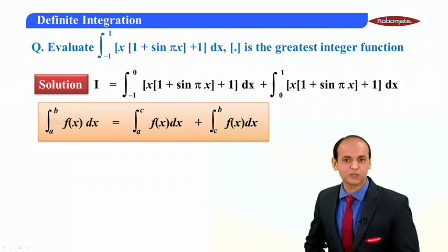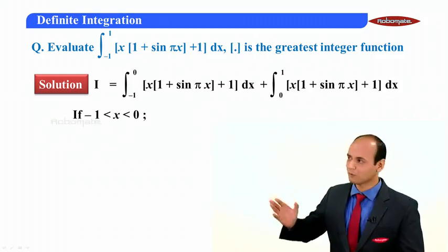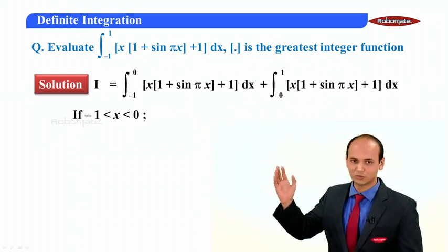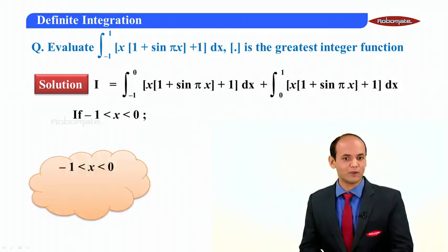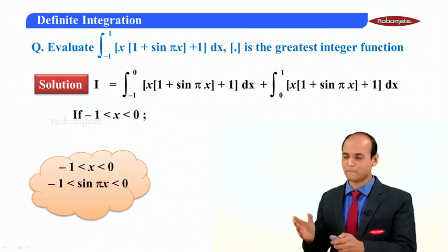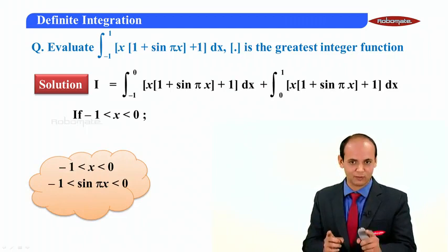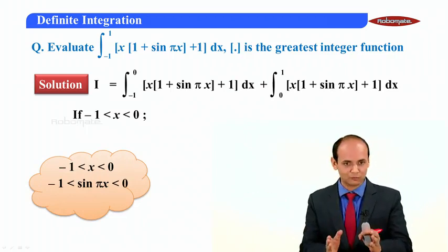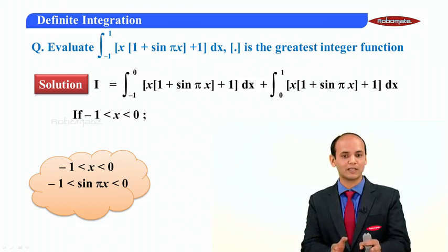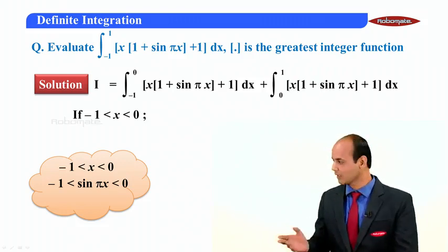Note that in the first integral, limits are from minus 1 to 0. When x is between minus 1 and 0, π·x is in the third and fourth quadrant. Therefore, sin(πx) has values from minus 1 to 0.